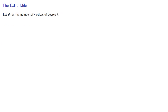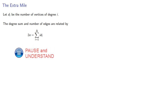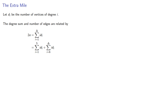Let's think about that. Let d_i be the number of vertices of degree i. The degree sum and the number of edges are related by twice the number of edges equaling the degree sum, and we can express that degree sum as the sum of i times the number of vertices of degree i. Since 5 seems to be an important number, let's split our sum into vertices with degree 5 or less and all the rest.